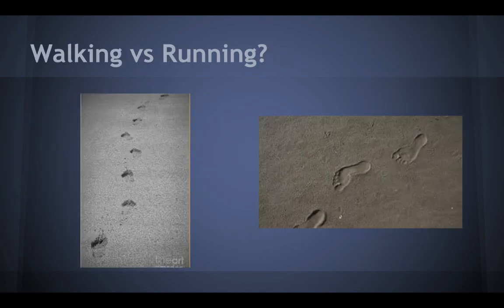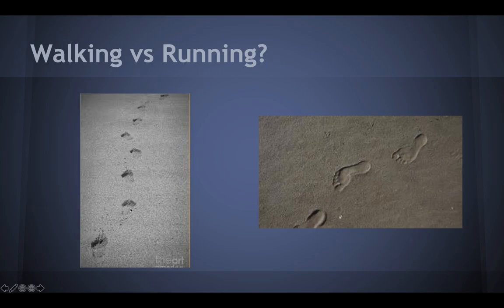Here's another example. Clearly this person's walking — very clear, uniform, close together prints. This one, I would guess the person is running because it's in a quite straight pattern and we see a really deep impression point at the toe. So I think this person is more of a toe runner.